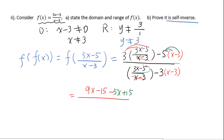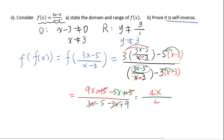Continuing with the denominator: expanding gives 3x minus 5 minus 3 times (x minus 3), which equals 3x minus 5 minus 3x plus 9. The negative 15 and positive 15 cancel in the numerator, leaving 4x. The 3x and negative 3x cancel in the denominator, leaving 4. So f of f of x equals 4x over 4, which equals x. The proof is complete.